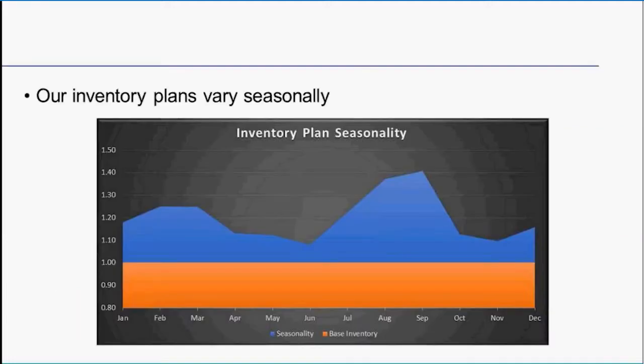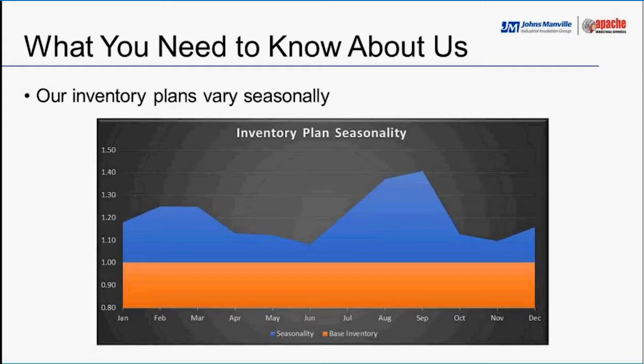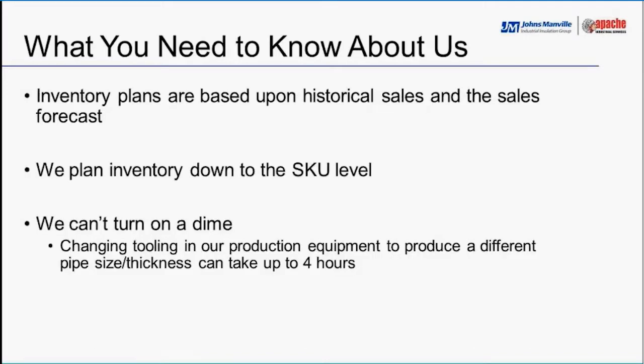How do you get the most from your manufacturer? Our inventory plans vary seasonally and are based on historical sales and sales forecasts from the field. We also plan our inventories down to the SKU level — the individual pipe size and insulation thickness — and can manufacture in any insulation material, whether calcium silicate, perlite, or mineral wool, with as many as 300-plus SKUs for each product line.